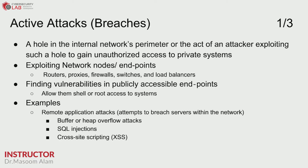Now let's look at the first active attack: breaches. A breach is any hole in the internal network's perimeter, or an act of an attacker exploiting such a hole to gain unauthorized access to a private system. Attackers exploit network nodes and endpoints, trying to find vulnerabilities in publicly accessible endpoints. Examples of breaches include buffer or heap overflows, SQL injection, and cross-site scripting.